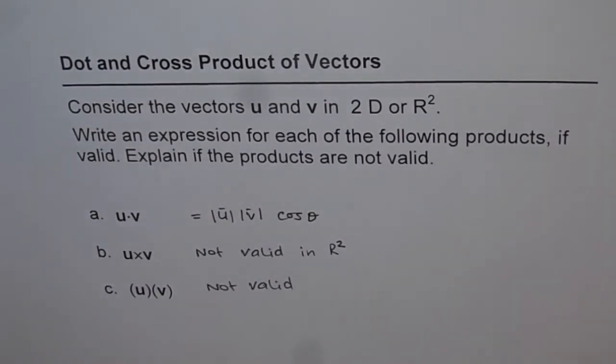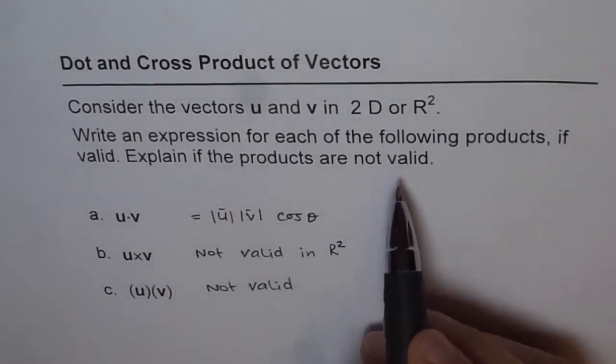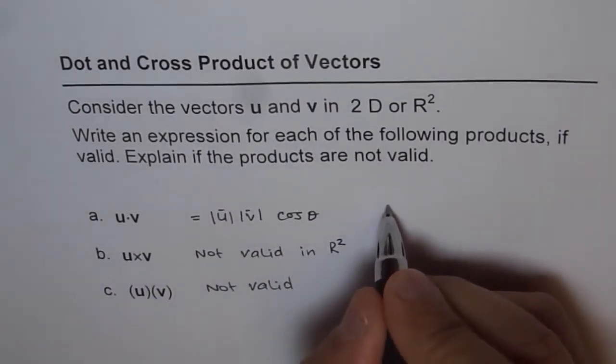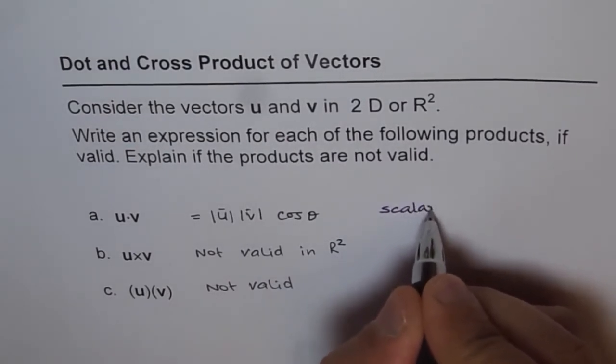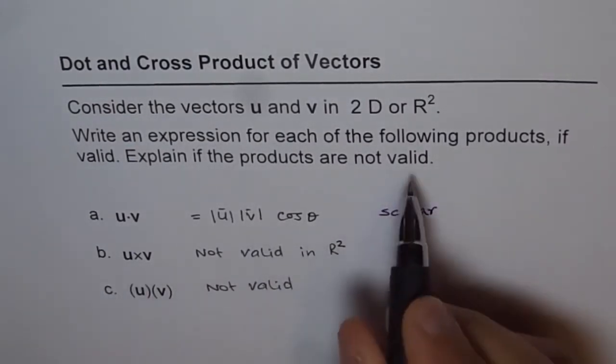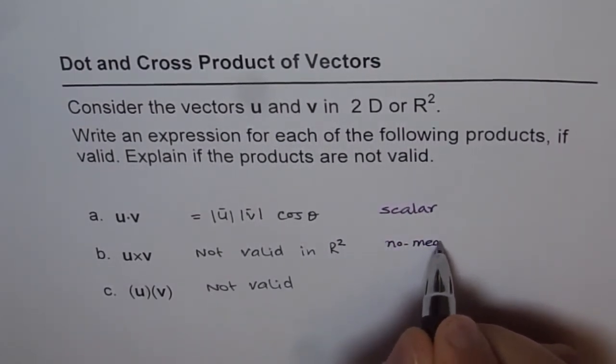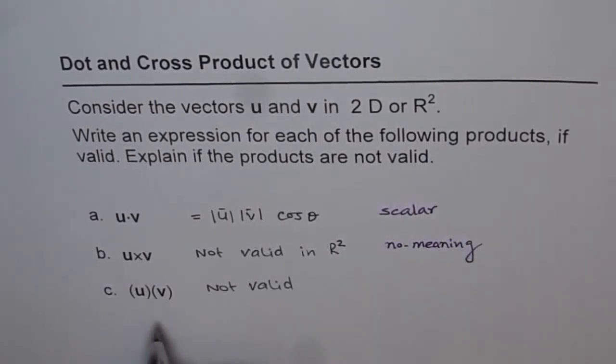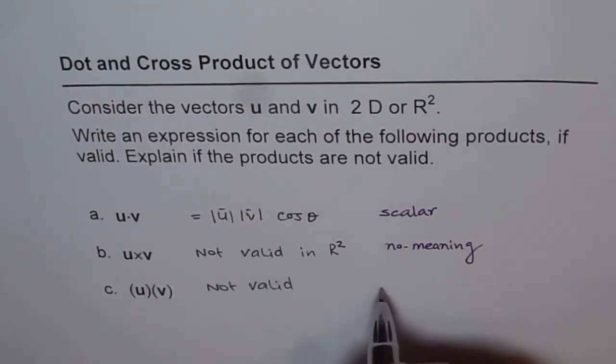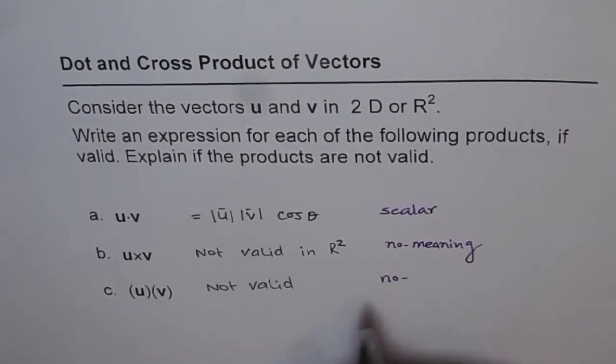So remember this: when you're writing u dot v in R², we're looking for a scalar product. But when you're writing u cross v in R², it has no meaning. And similarly, u times v has no meaning in R², or even otherwise.